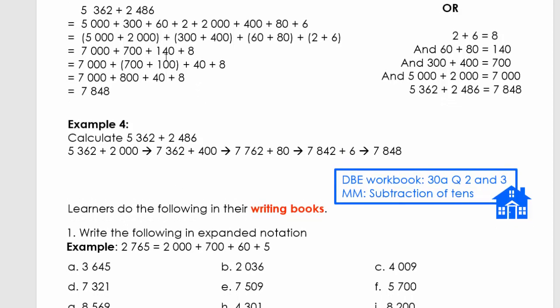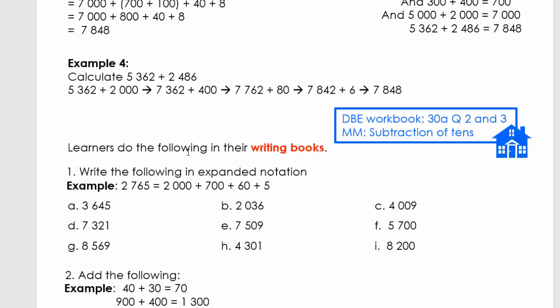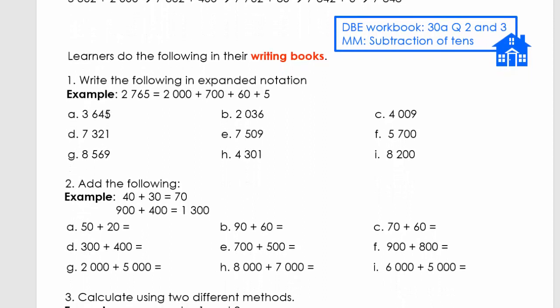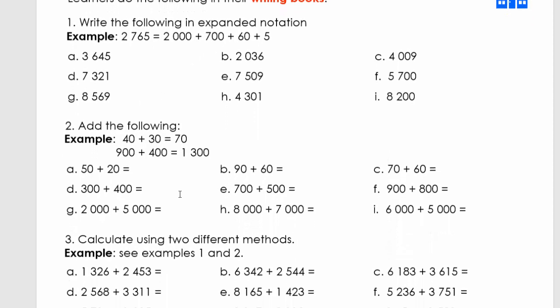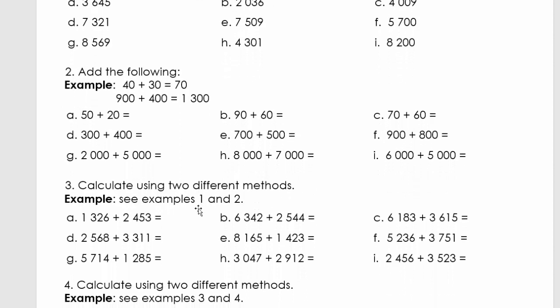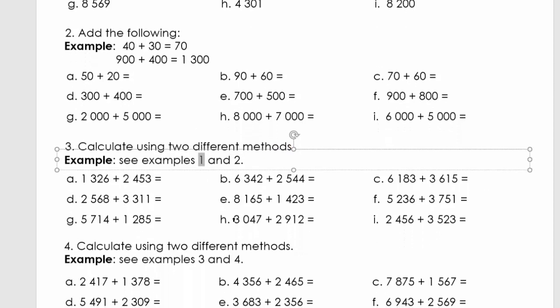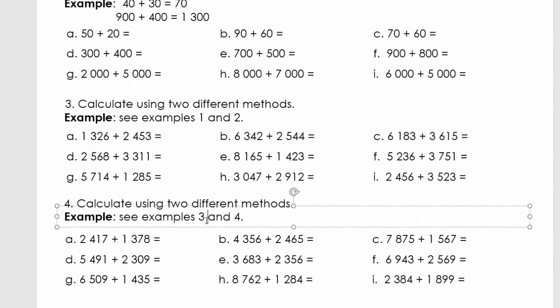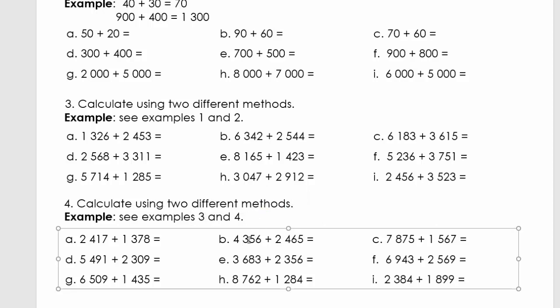After this, you're going to use the methods I explained and complete your worksheet. You can do the worksheet in the DBE book or use the SA Teacher worksheets. You'll write the following in expanded notation and calculate using different methods. Start with example one and if you have time, carry on with example two. The same with question four: use example three, but if you have time, carry on with example four.